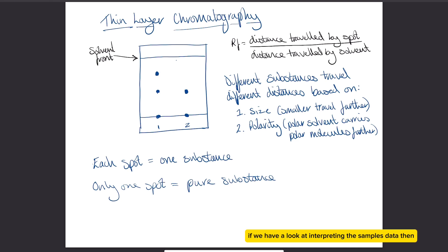If we have a look at interpreting the sample data, this would be our developed TLC plate. We have the line the solvent got to, which is also known as the solvent front, and then we can see that our sample has separated out. The RF value is a decimal value, essentially just a decimal fraction of how far the spot traveled with the solvent. To work out the RF value, you would do the distance traveled by the spot divided by the distance traveled by the solvent.